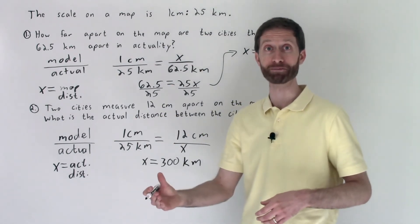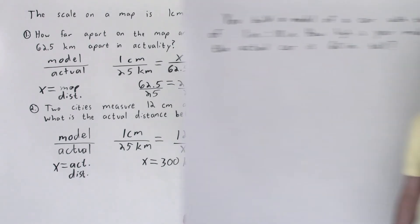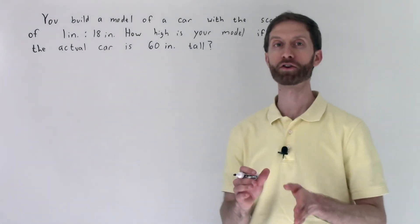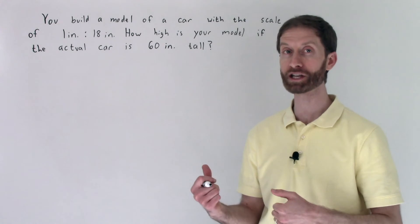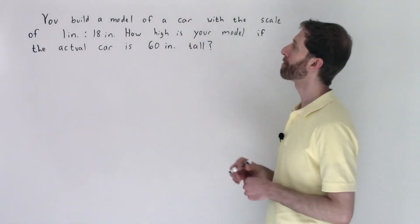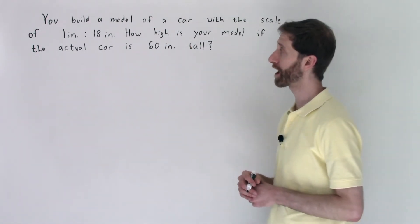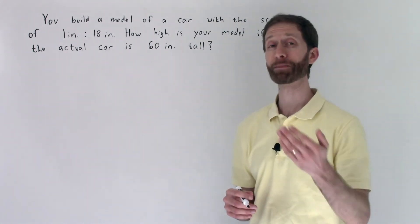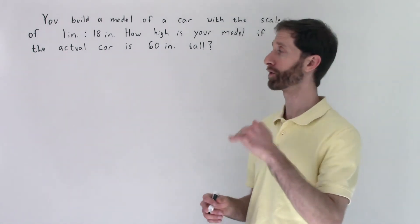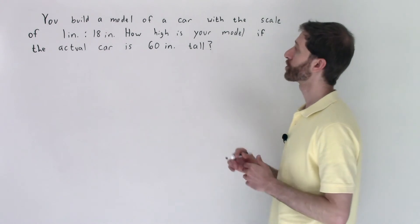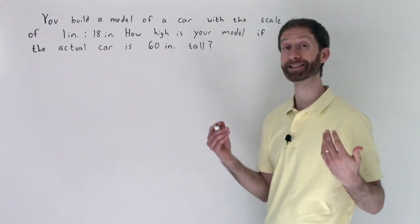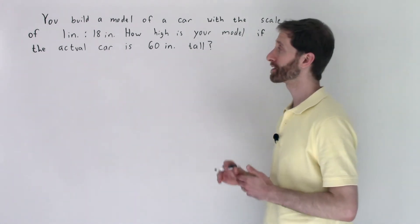Stay tuned on the next clip, we're going to go over another word problem. And here we have another scale word problem. Let's dig right into it. It says you build a model of a car with the scale of one inch compared to 18 inches, or one inch for every 18 inches. How high is your model if the actual car is 60 inches tall?